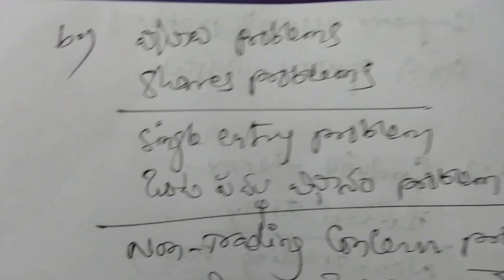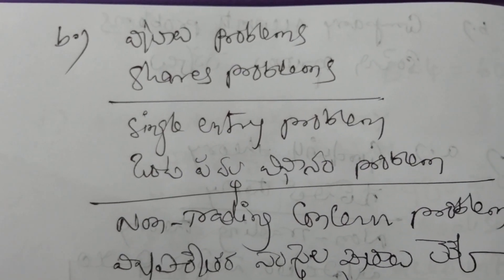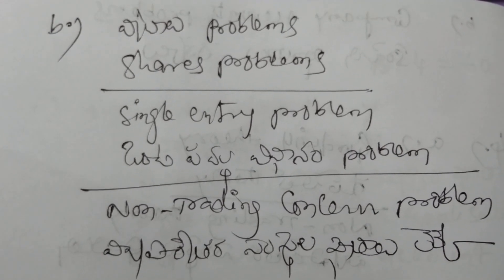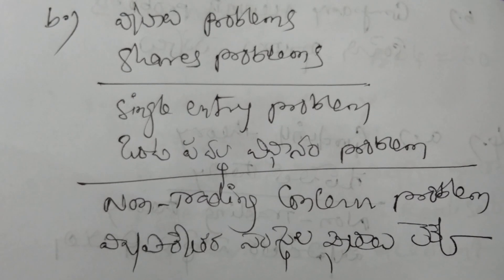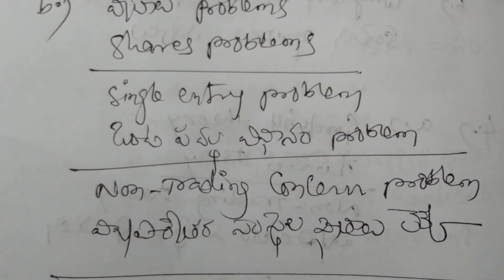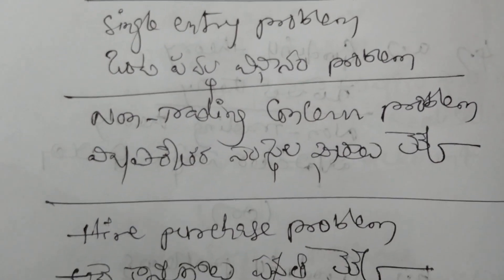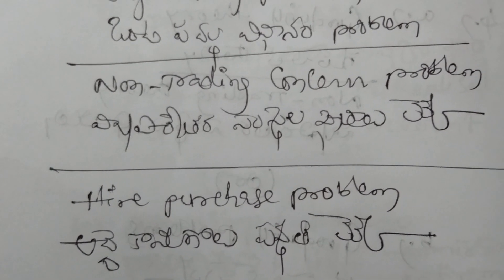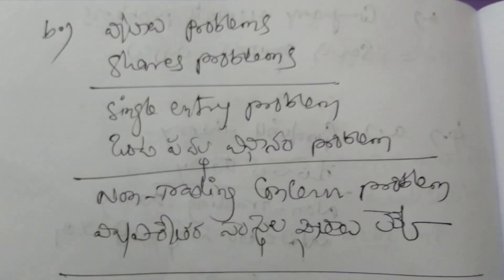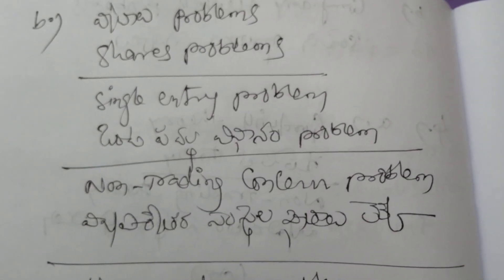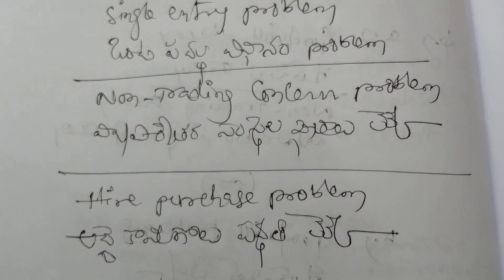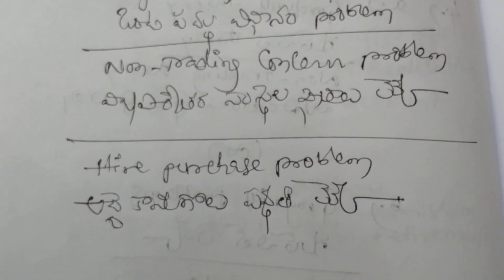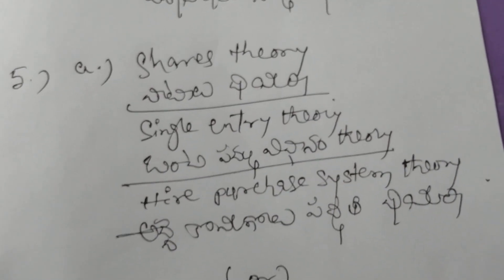Next, fifth point B: problems are available. Shares problems will be there. Shares problems are important and will be asked in the long bit.